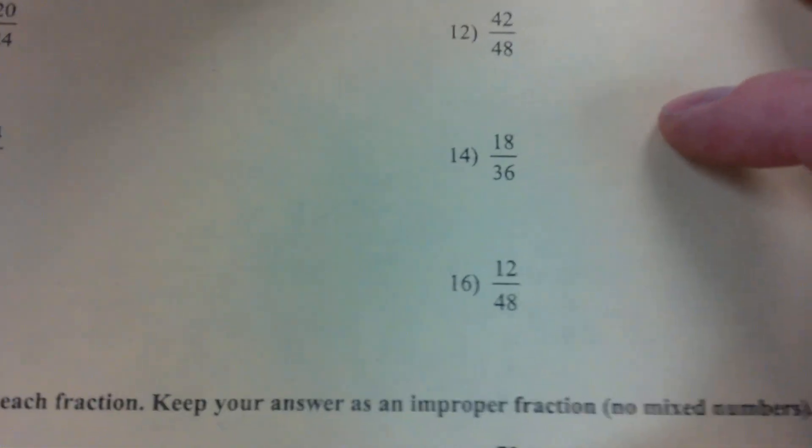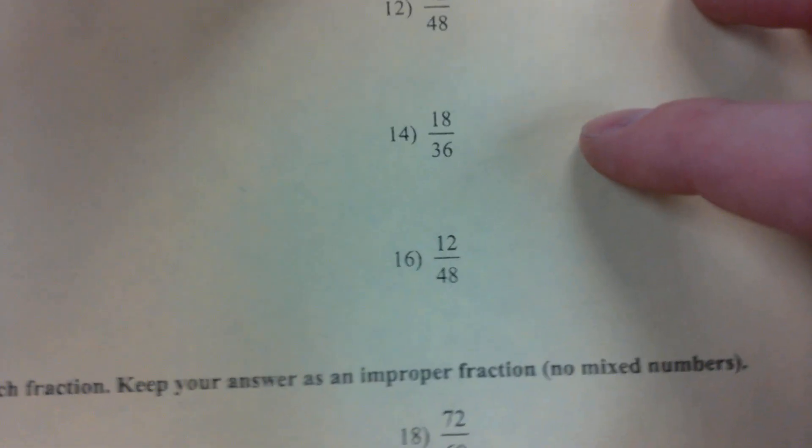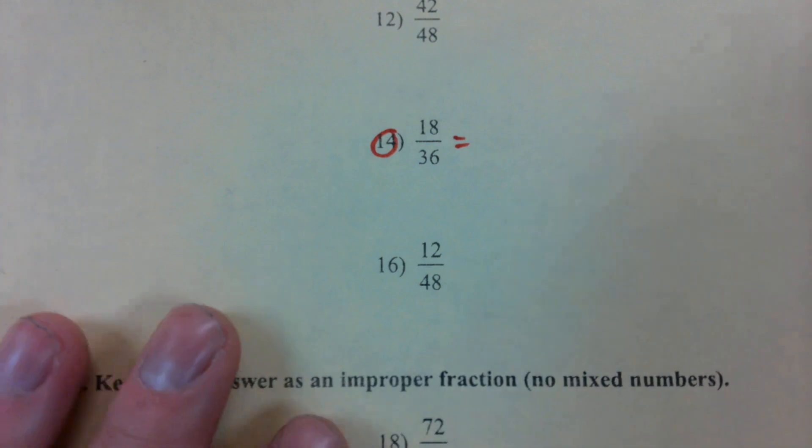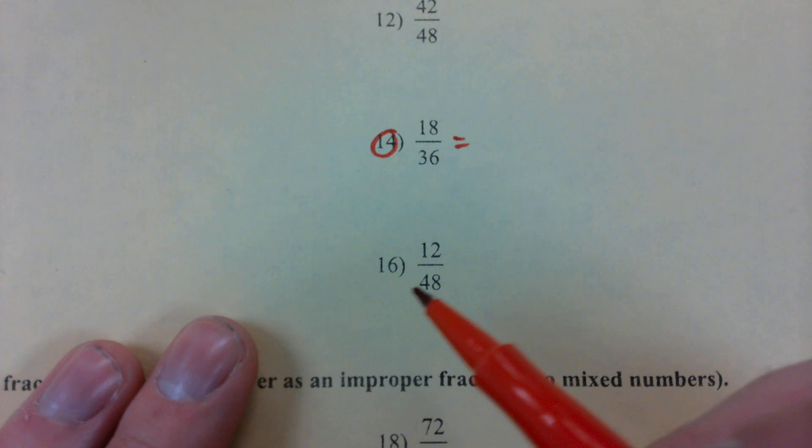Let's go on to fractions. We broke this down yesterday, but we'll go over it again. Eighteen over thirty-six. We'll do fourteen. And remember, if we're going to break down this fraction, we want to ask ourselves what two numbers multiply to get each number.